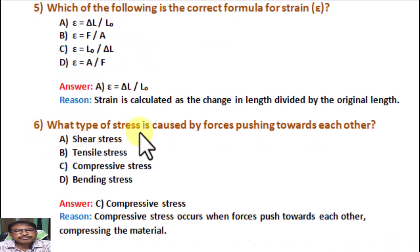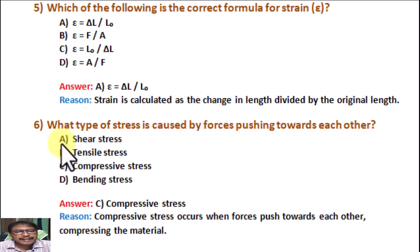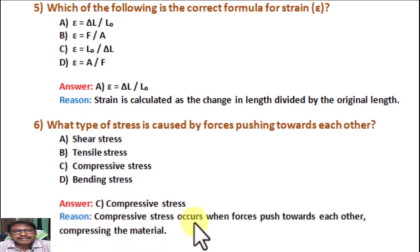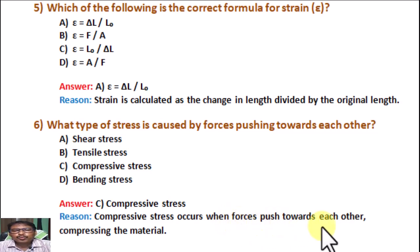Question number 6. What type of stress is caused by forces pushing towards each other? A: Shear stress. B: Tensile stress. C: Compressive stress. D: Bending stress. Correct answer is C, Compressive stress. Reason: Compressive stress occurs when forces push towards each other, compressing the material.